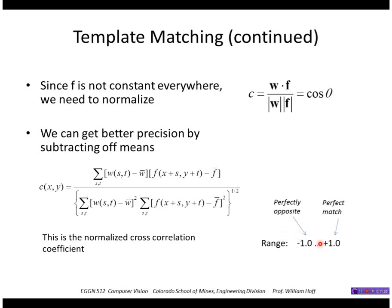If the value is minus 1, they're perfectly opposite. So wherever one was bright, the other was dark, and vice versa.